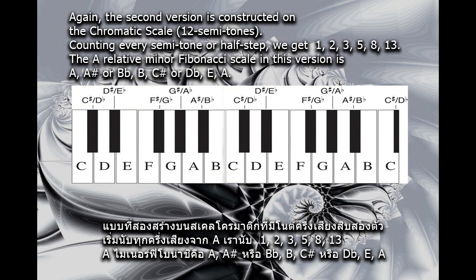The second version is constructed on the chromatic scale, 12 semitones. Counting every semitone or half step, we get 1, 2, 3, 5, 8, 13.